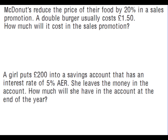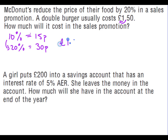Let's look at some wordy functional skills questions involving percentage increases and decreases. McDonut's reduce the price of their food by 20% in a sales promotion. A double burger usually costs £1.50. 10% of £1.50 is 15 pence, so a 20% reduction means taking off 30 pence. £1.50 minus 30 pence gives a promotion price of £1.20.